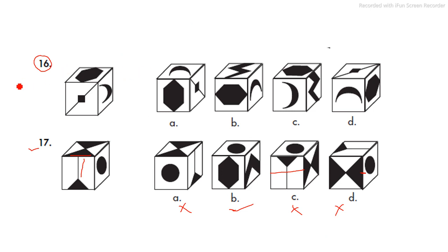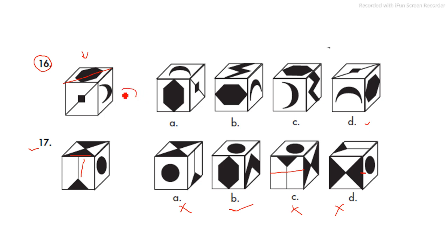Now coming to question number 16, which I left for last. This is a somewhat debatable question — something seems wrong with it. In the main question, the hexagonal shape is coming across the diagonal of the cube. But in the answer options, the hexagon is coming diagonally only in option D; in options A, B, and C, the hexagon is in the middle of the box. If we go with option D, the moon orientation means the box has to be rotated so the hexagon comes to the left side, but in option D the hexagon is on the right side — making it a mirror image.